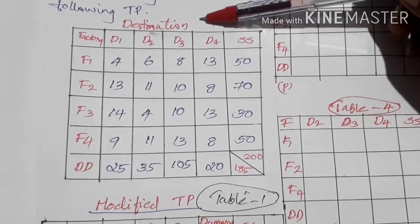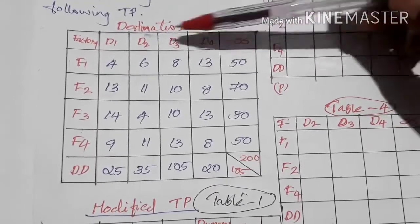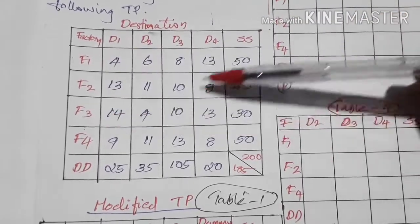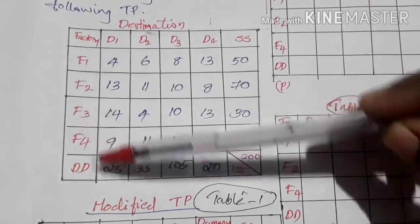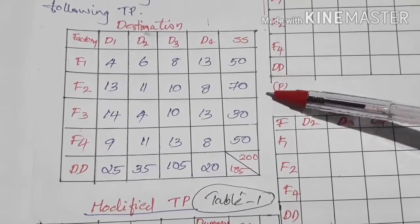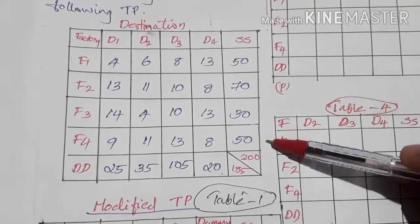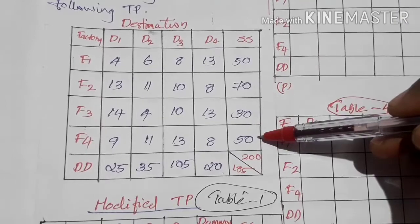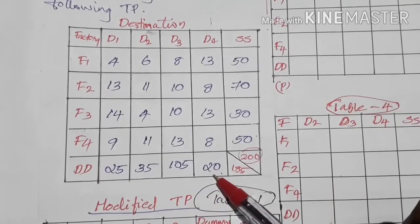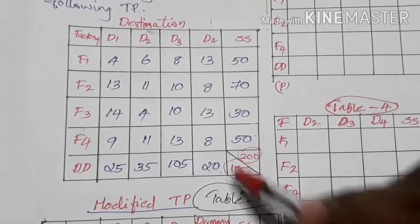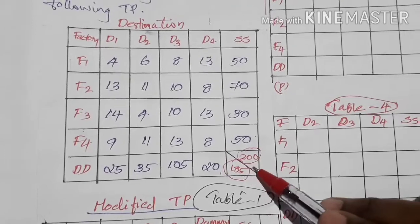In the transportation table, destination means where the product is delivered. There are four destinations: D1, D2, D3, and D4. There are four factories: F1, F2, F3, and F4. The total supply is 200 units. The demand values are 25, 35, 105, and 20, giving a total demand of 185 units. Since supply is not equal to demand, this is an unbalanced transportation table.